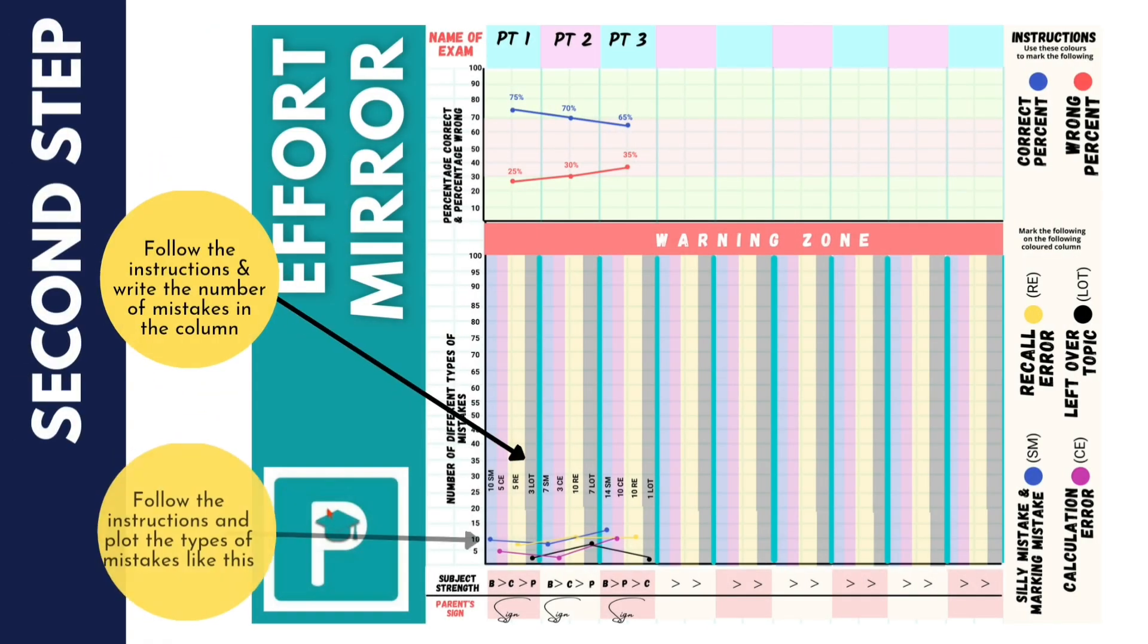In addition to the first explanation, we have a column where we have categorized mistakes into four types: silly mistake and marking mistake, calculation error, recall error, and leftover topic. Using the same color you have to plot the graph in the confined region. This will make you aware of the mistakes which you can rectify in future.